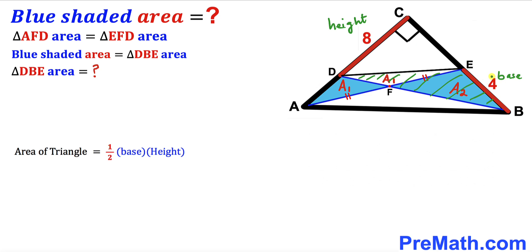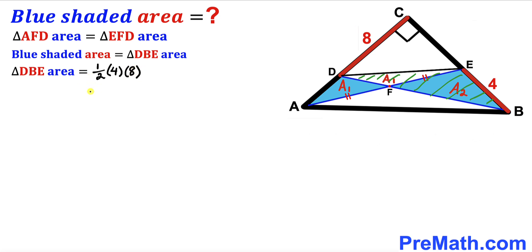The base of this triangle turns out to be 4 and the height is 8. Filling in the formula: area = ½ × 4 × 8. Simplifying the right-hand side gives us 16. So the area of triangle DBE turns out to be 16 square units.